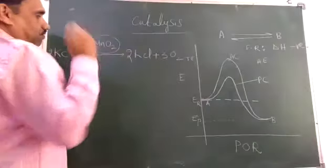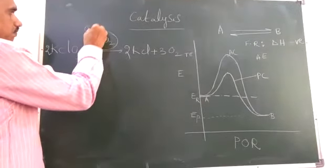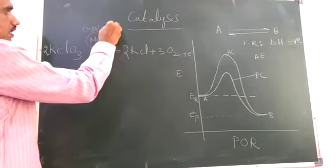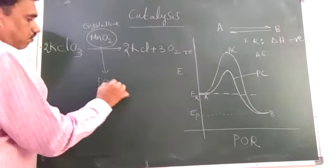During the usage of manganese dioxide, initially it is in crystalline form. After the completion of the reaction, it converts into powdered form.